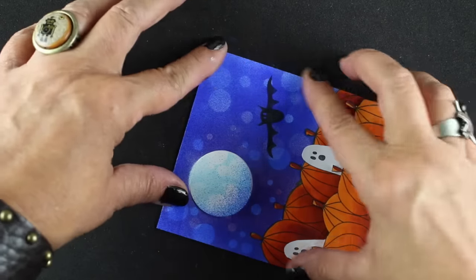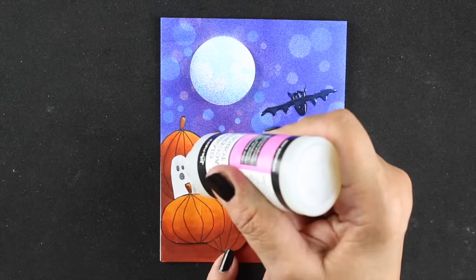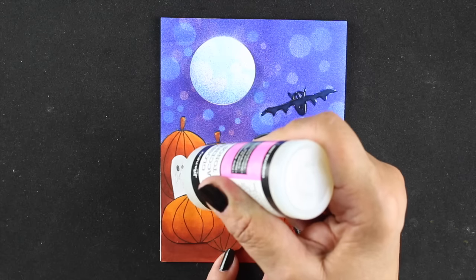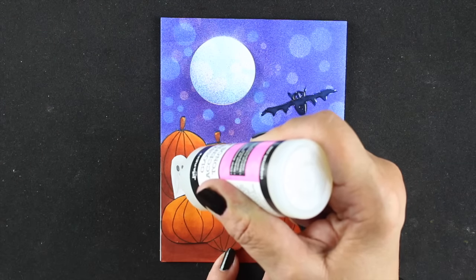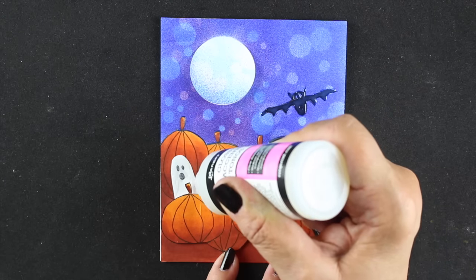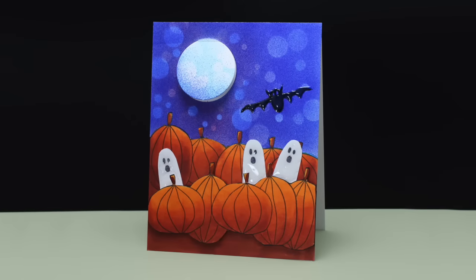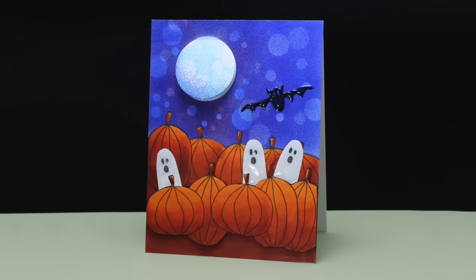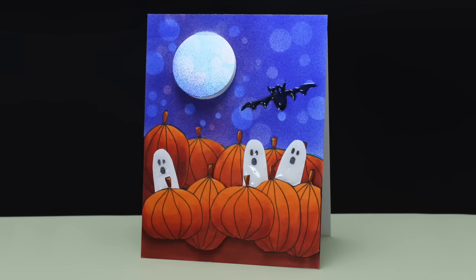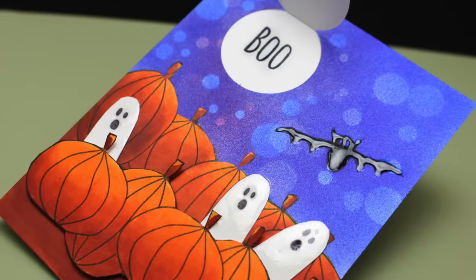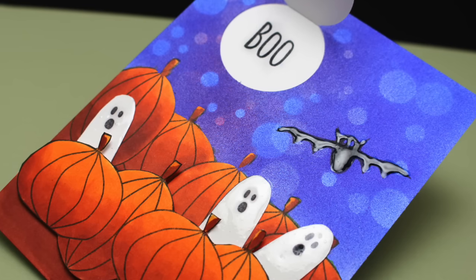My final step on this card is going to be to add some glossy accents on the bat and on the little ghosties. I am using the regular bottle nib. I bought one of those replacement nibs that I saw lots of other folks talking about, and I have not found that it actually works for me. I can't even get it to stay on the bottle. So I had to throw that other one away and buy a new one. But it's okay because I love a brand new nib in a glossy accents bottle because it makes my cards so pretty and shiny. I think the ghosts look extra happy when they're shiny and ghost-like.